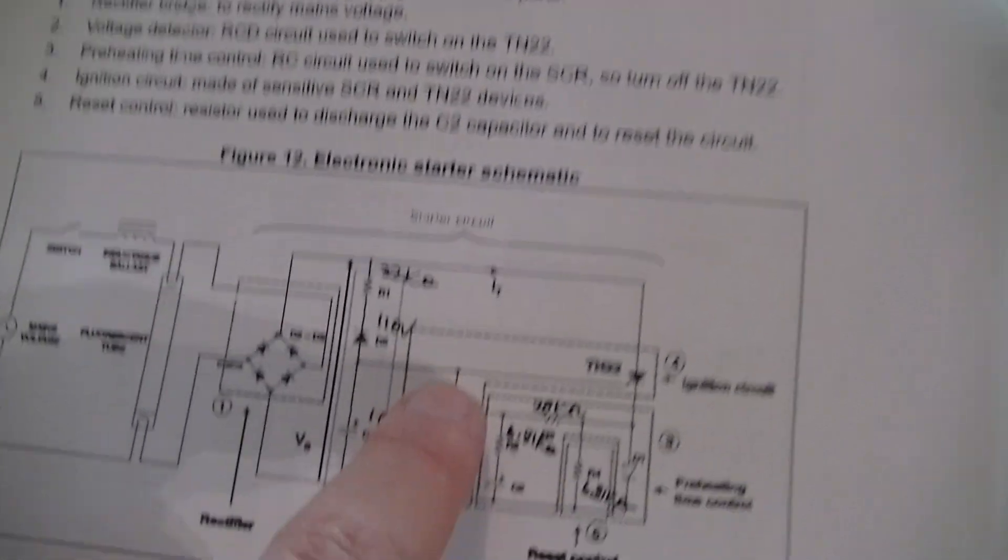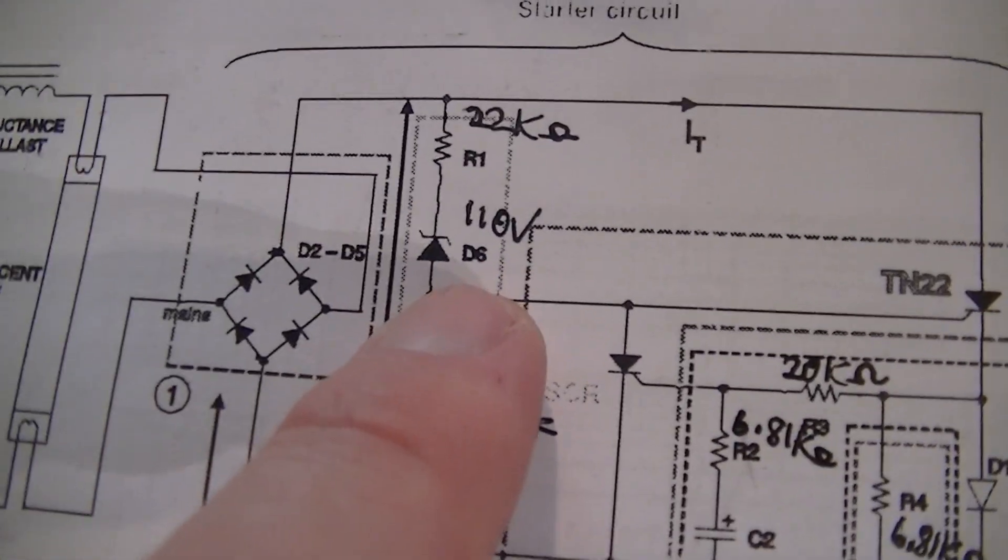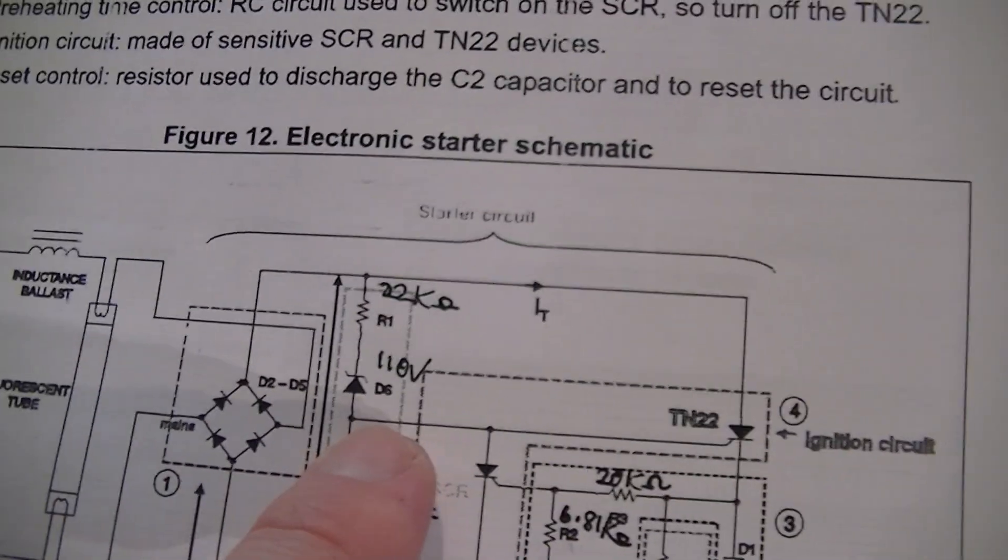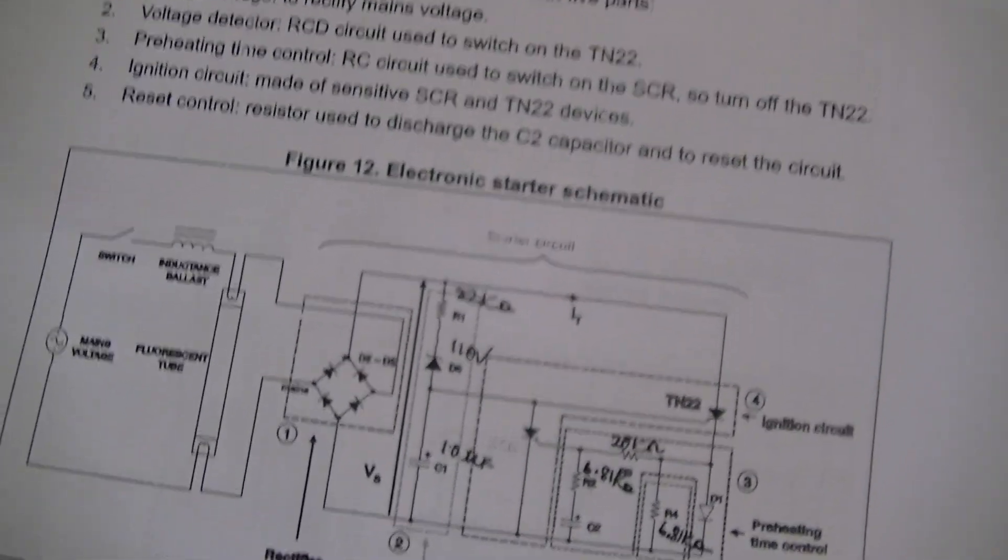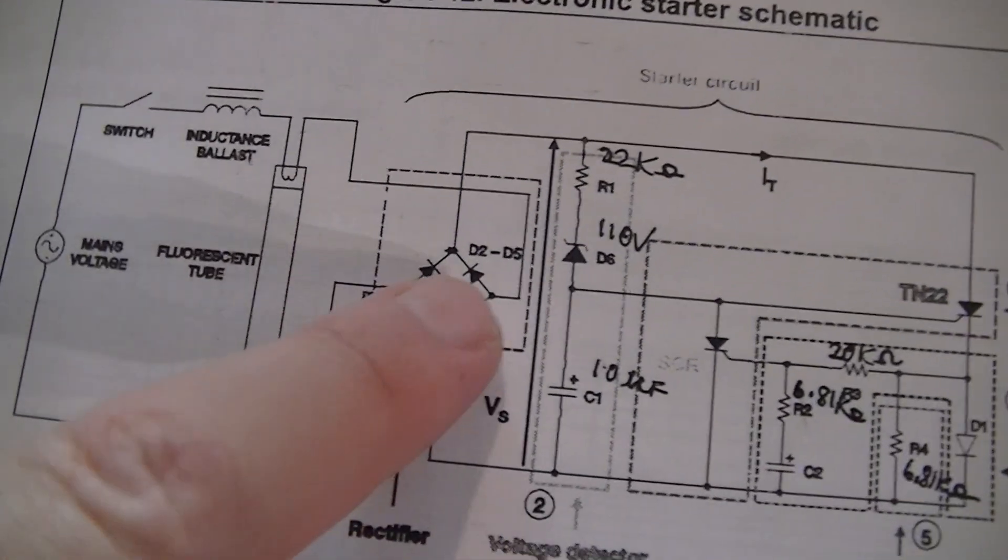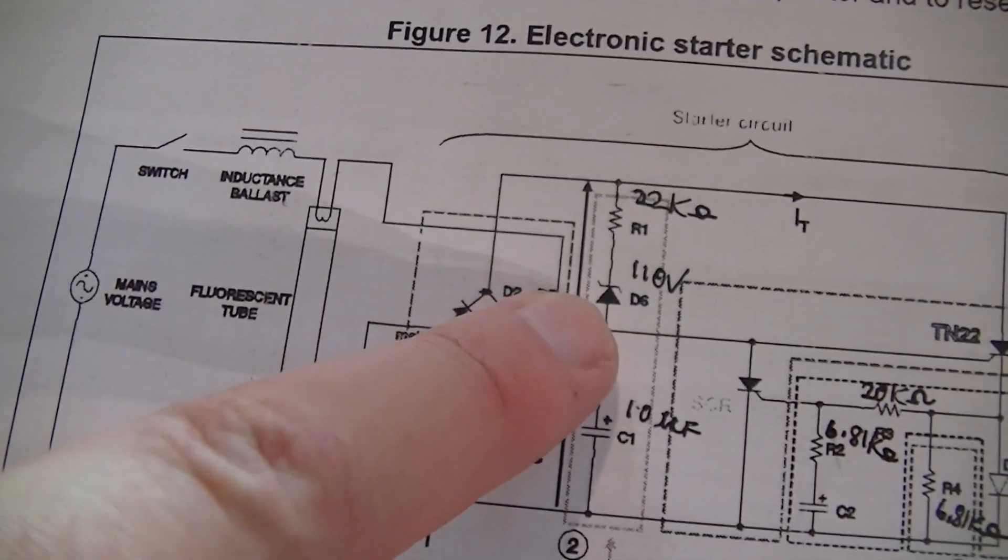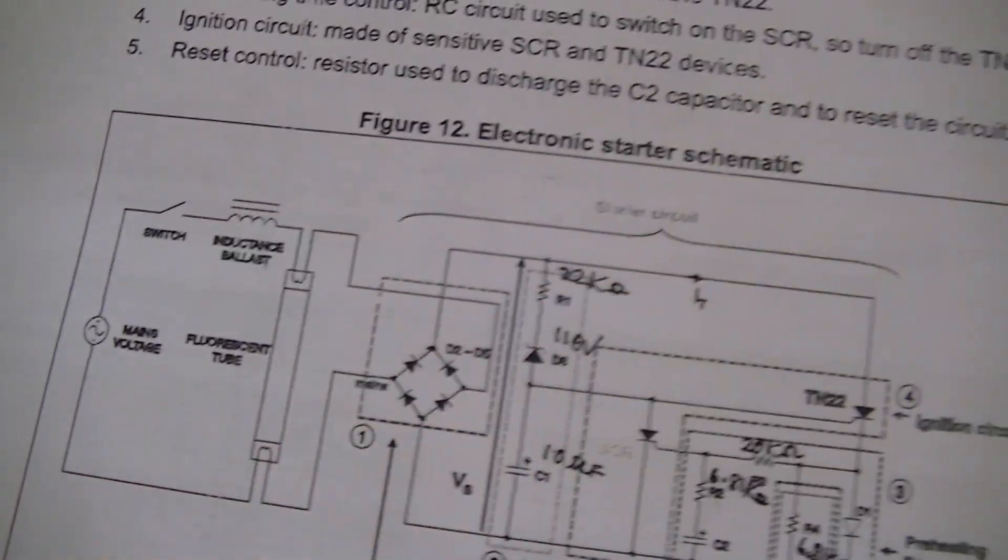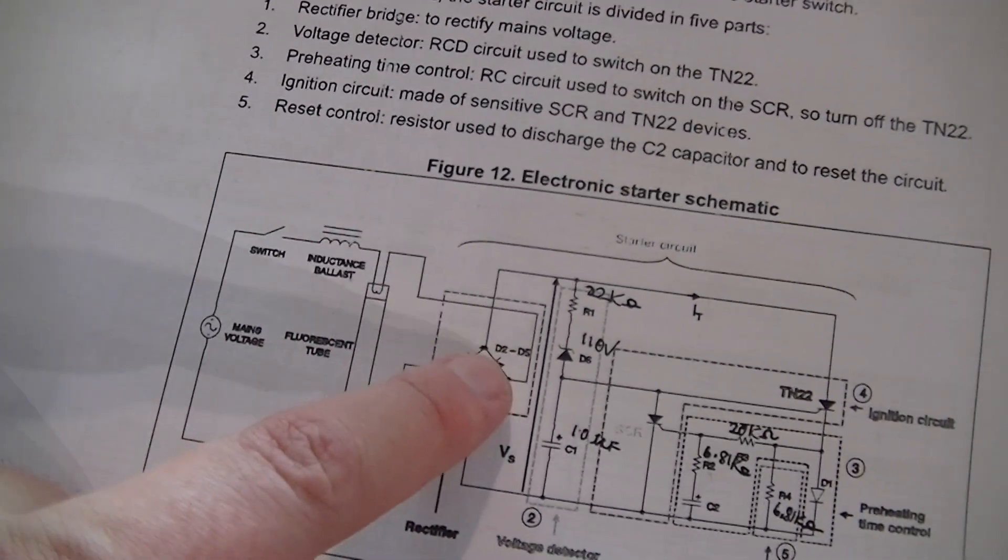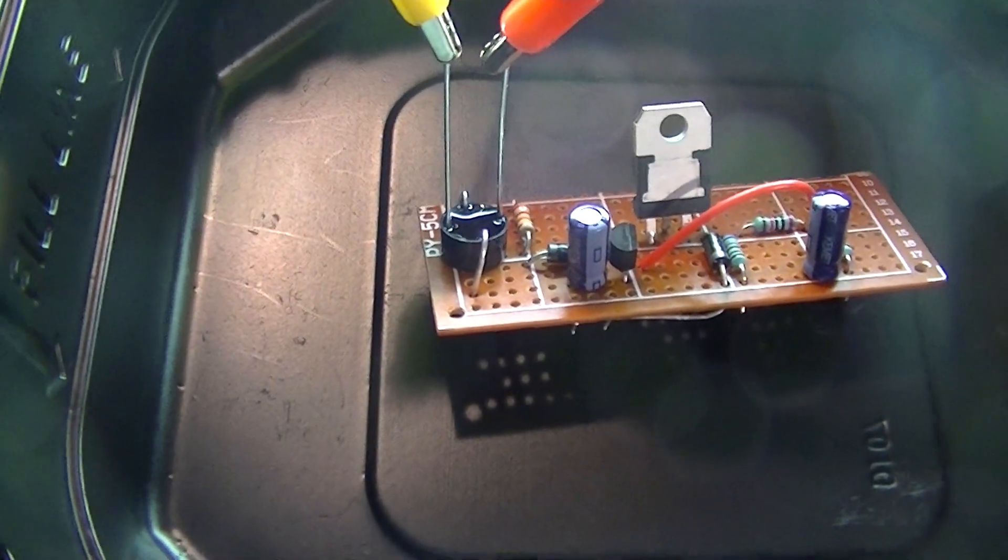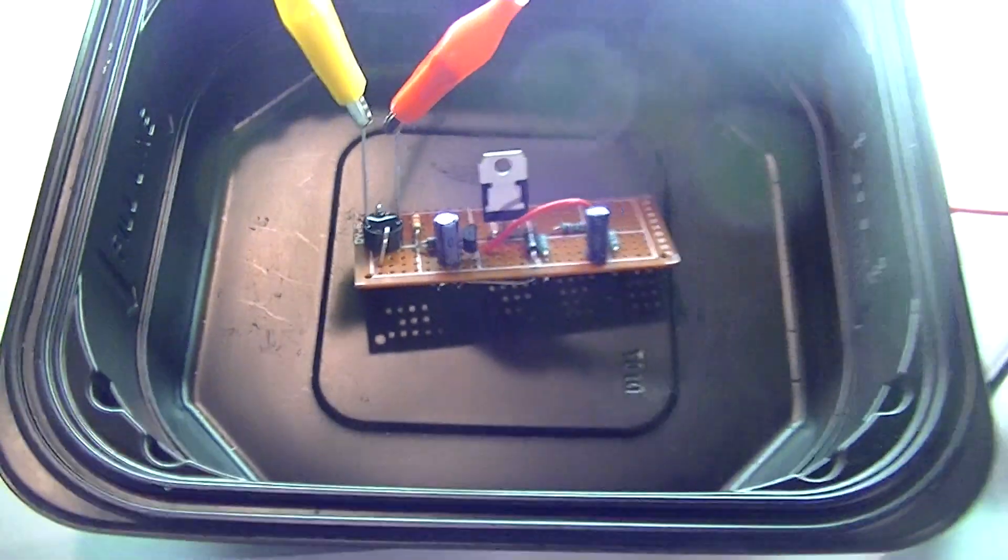But all you need to do to modify the circuit to work on 100 odd volt lamps, like F32 T8, F36 T8, F40 T12, you just replace that with about a 200 to a 220 volt avalanche diode, and make sure that that bridge rectifier is rated for at least a thousand volts, because I'm using a 600 volt 2 ampere bridge rectifier, because that's what I had.